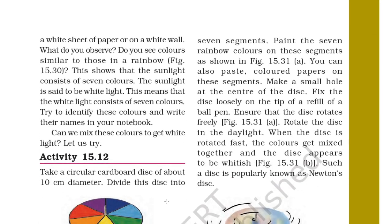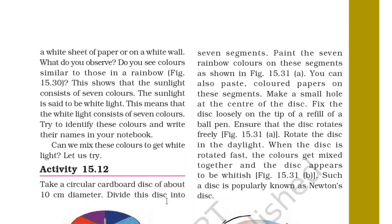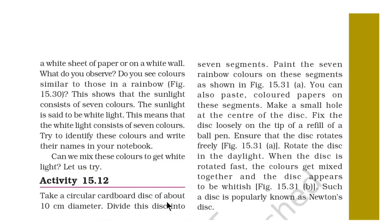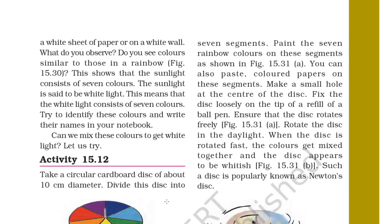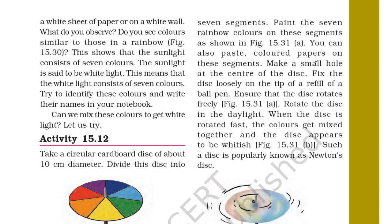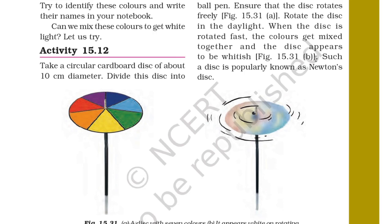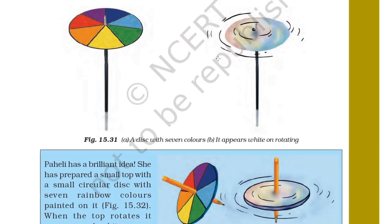Can we mix these colors to get white light? In Activity 15.12, take a circular cardboard disc of about 10 cm diameter and divide it into 7 segments. Paint the 7 rainbow colors on these segments. You can also paste colored papers on the segments. Make a small hole in the center of the disc and fix the disc loosely on the tip of a refill of a ballpoint pen so that it rotates freely. When this disc is rotated fast, the colors mix to appear whitish. Such a disc is popularly known as Newton's disc.